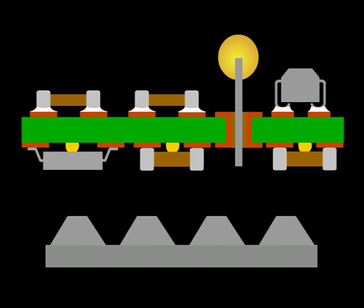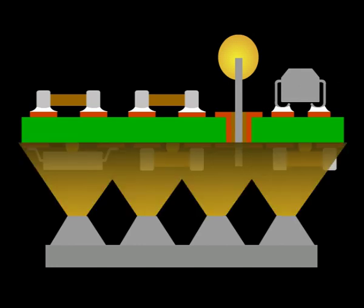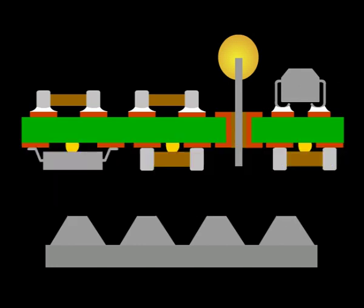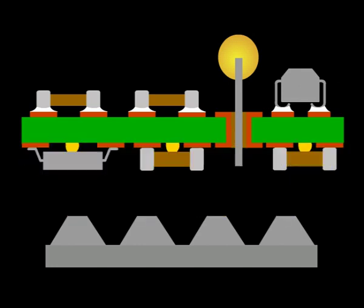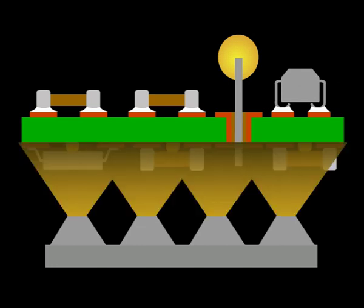Spray fluxing is becoming the most common method used with flux applied to the bottom of the board and into the through holes. Flux cleans all metal surfaces prior to solder contact.